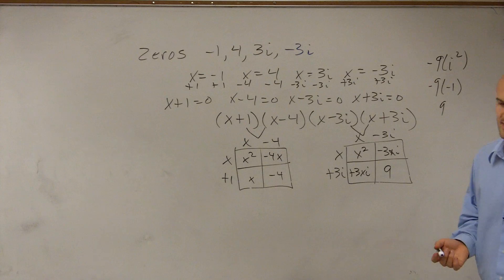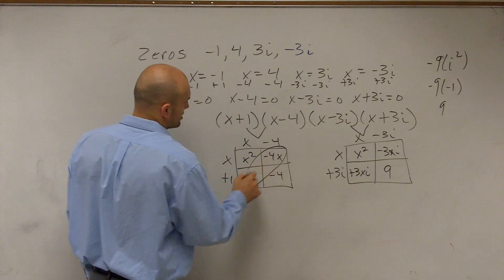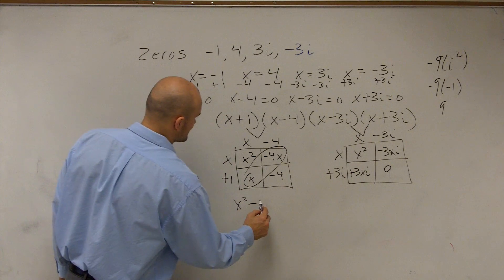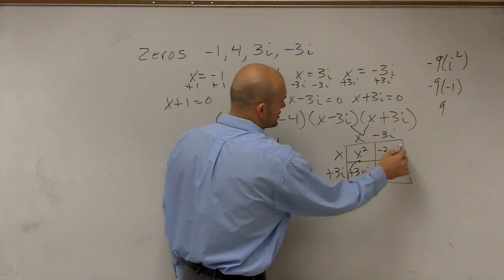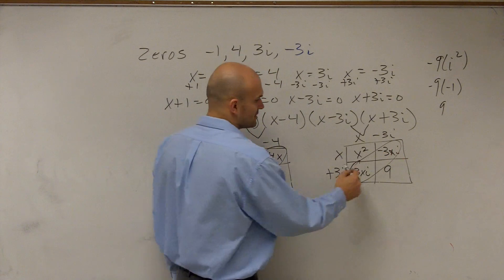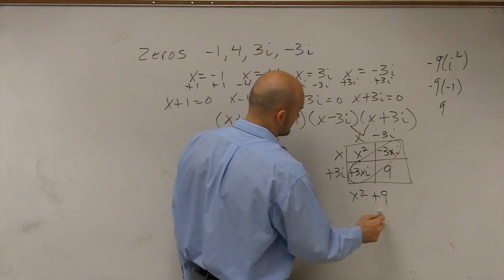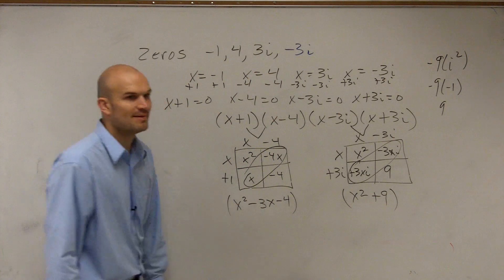So what we notice is let's combine like terms. These terms combine to give us negative 3. So we have x squared minus 3x minus 4. And over here I'm just going to have these two terms are like terms and they cancel out or they add up to 0. So therefore I have x squared plus 9.